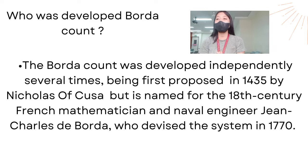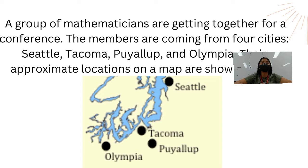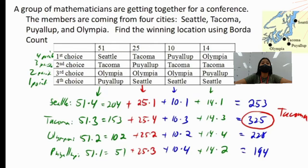Now let's look at some examples of how to solve the Borda Count Method. A group of mathematicians are getting together for a conference. The members are coming from four cities: Seattle, Tacoma, Puyallup, and Olympia. We will find the winning location using the Borda Count Method.